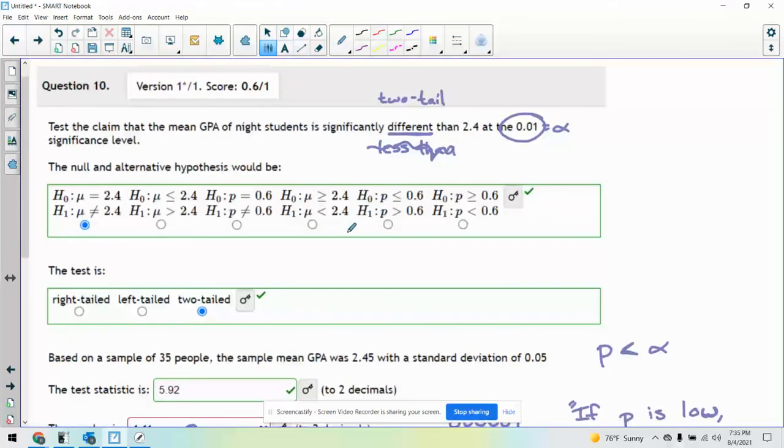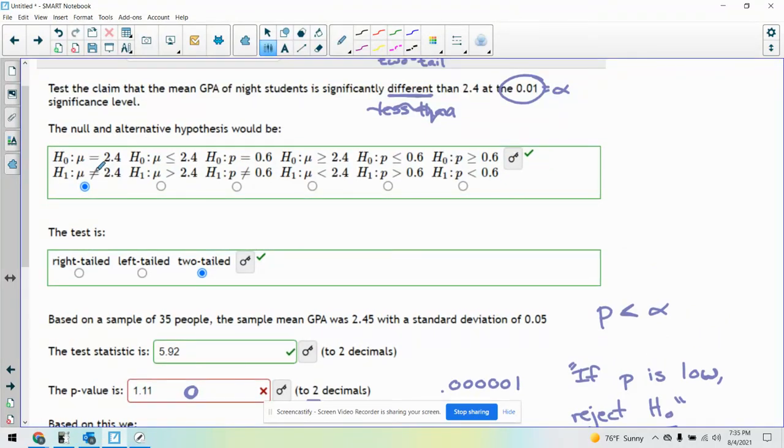Okay. So again, if you're just showing not the same, any kind of significant difference, that's two-tailed. Significantly less than would be left, greater than would be right. All right.